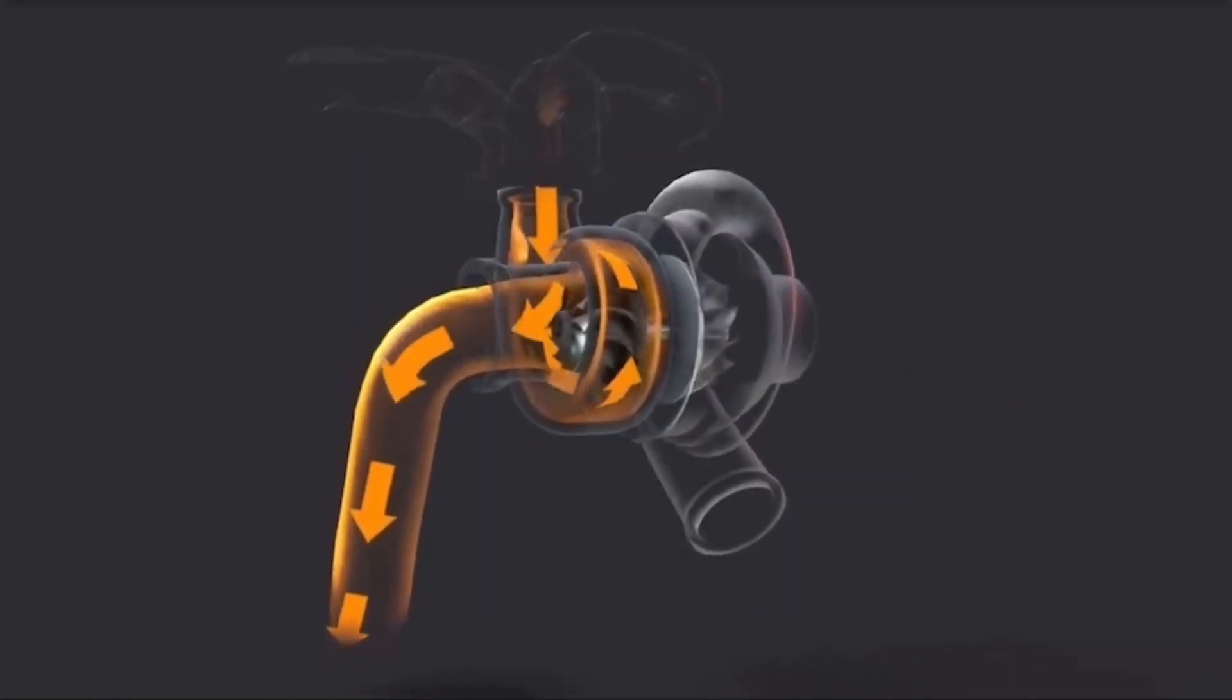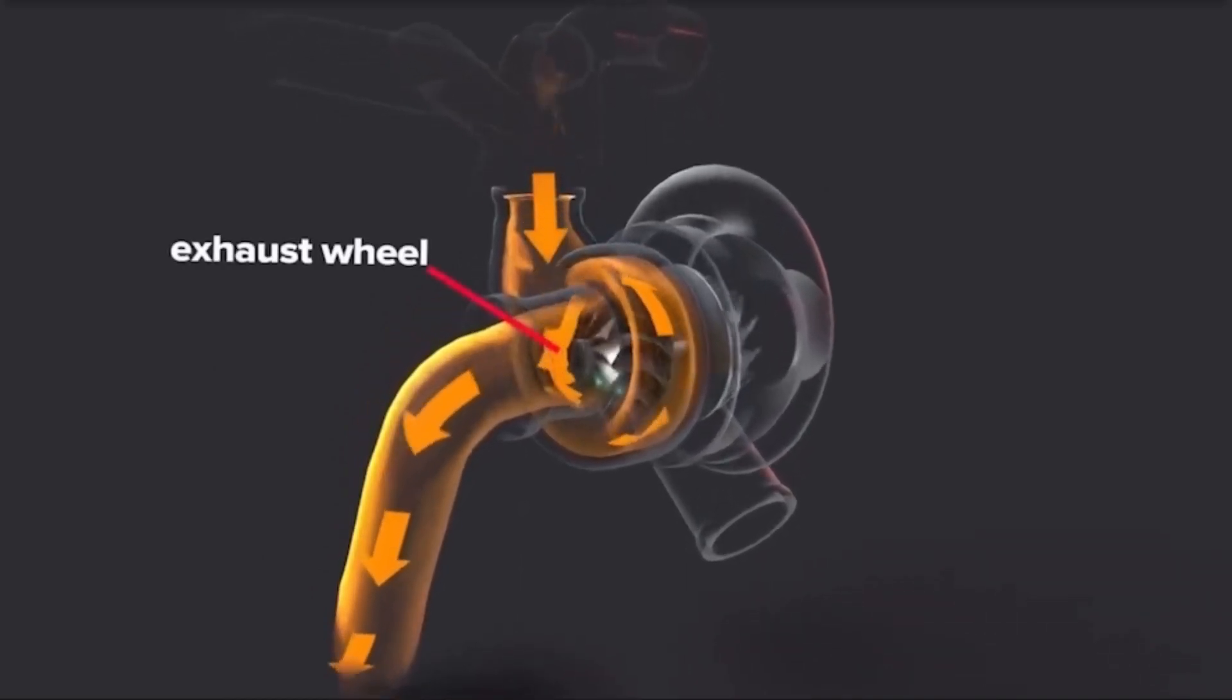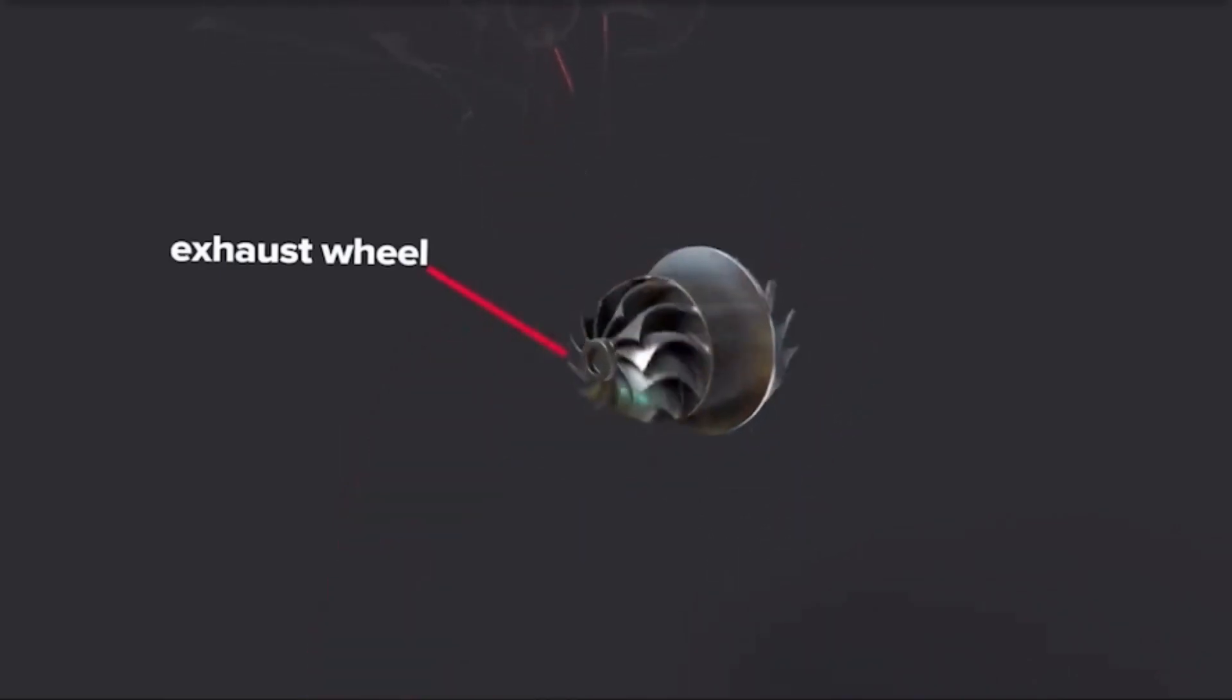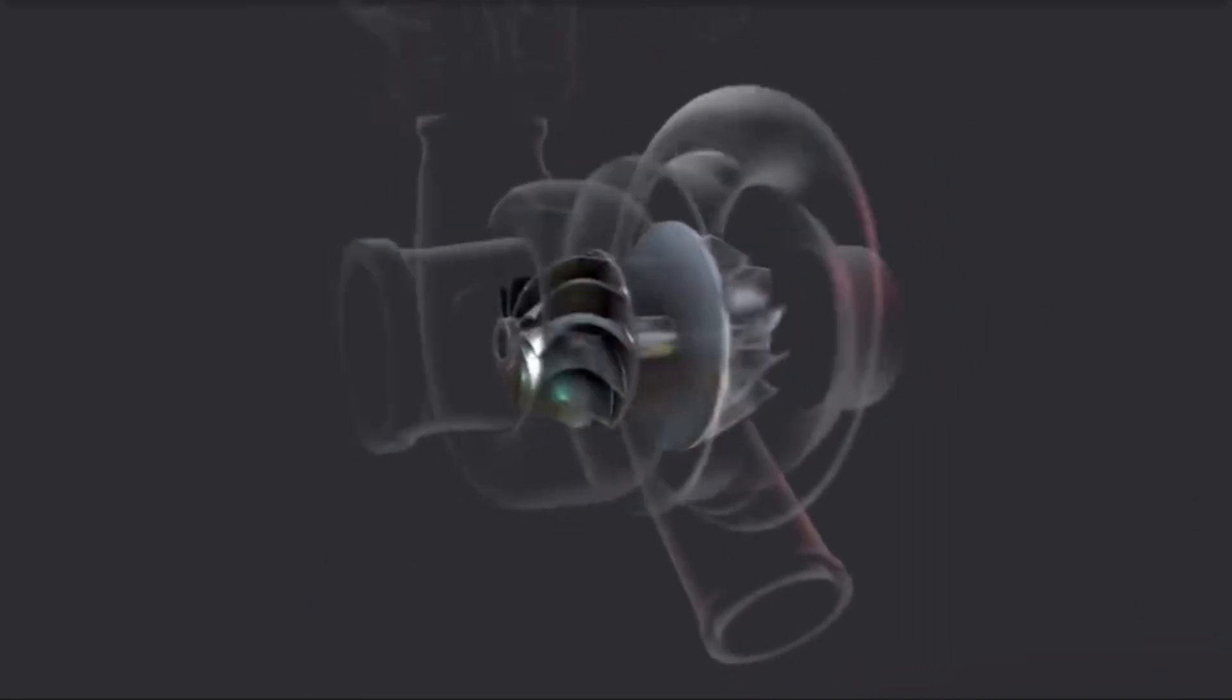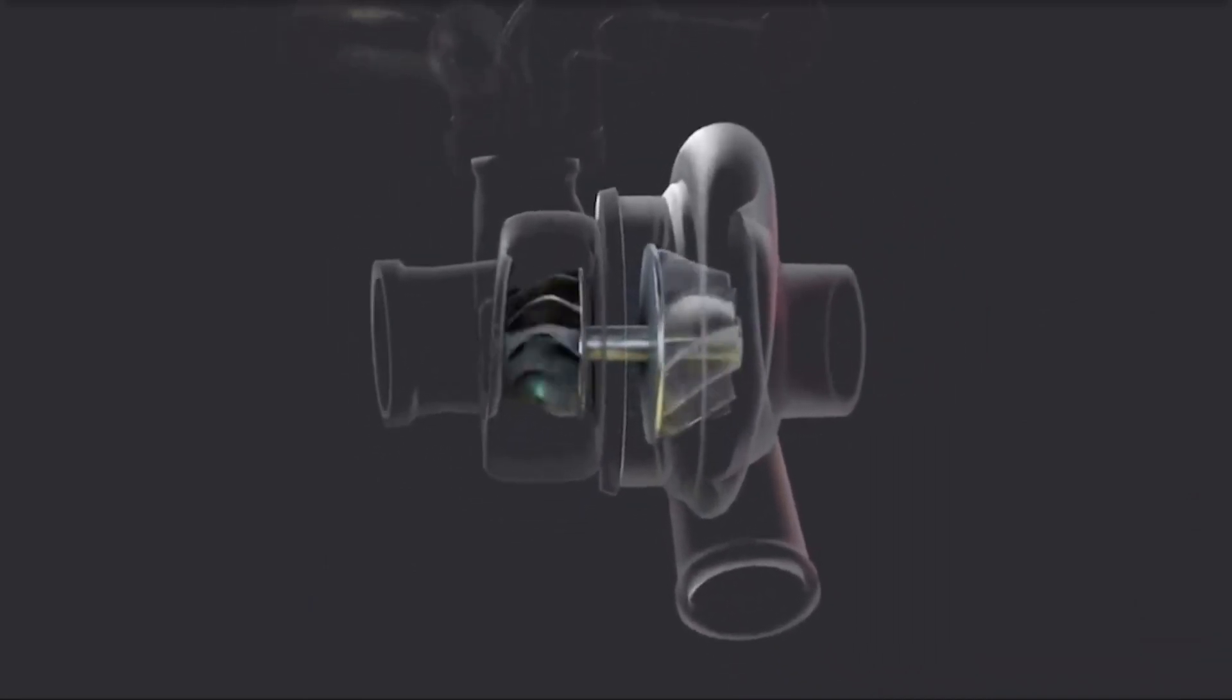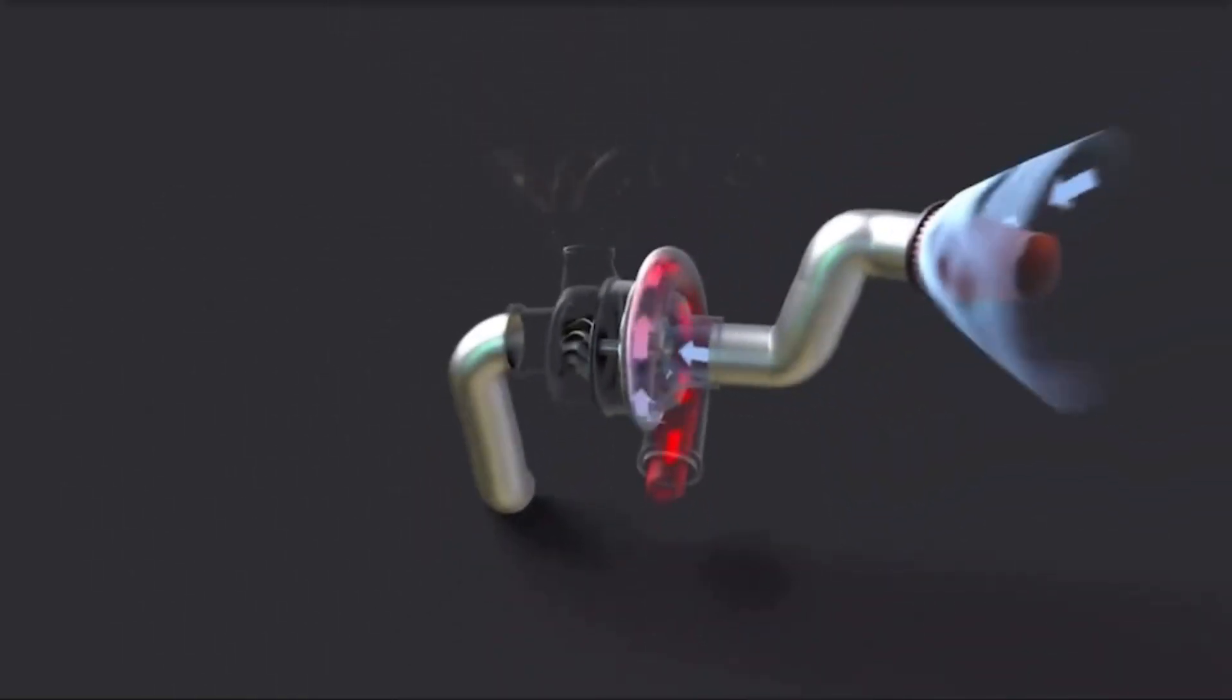Now this varies on the setup of how the turbocharger is actually implemented within a car, but essentially the exhaust gases are connected from the exhaust manifold to the turbine side of the actual turbo. As the volume of exhaust gases increases evacuating the engine, the turbine actually spins faster.